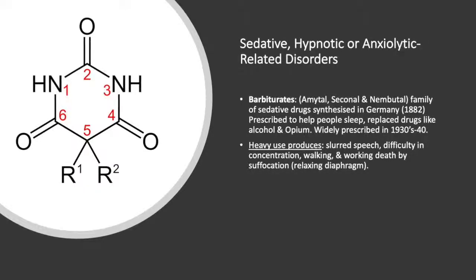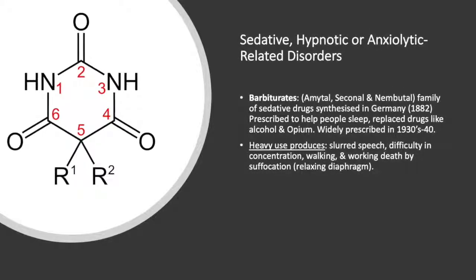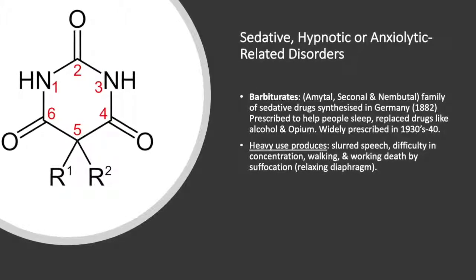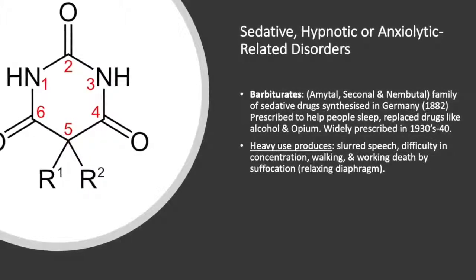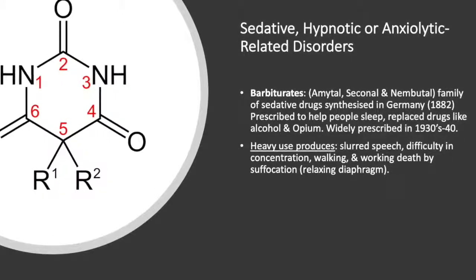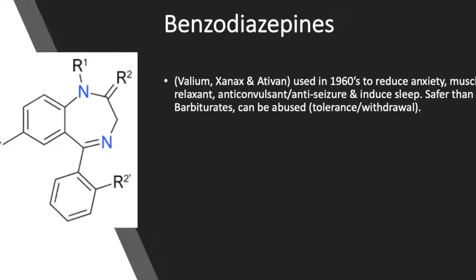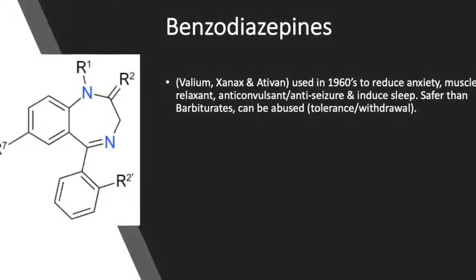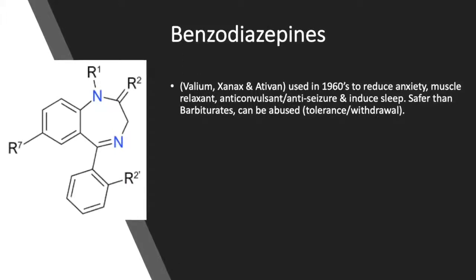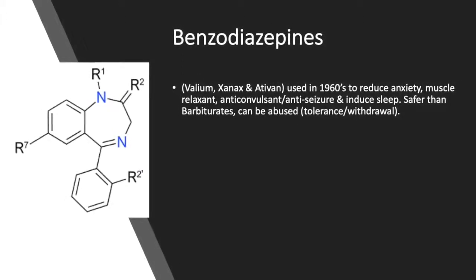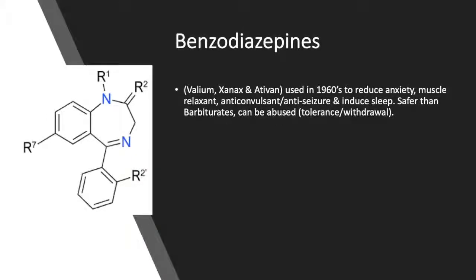Now I'll be talking about sedative, hypnotic, or anxiolytic-related disorders. Barbiturates, such as amytal, seconal, and nembutal, are a family of sedative drugs synthesized in Germany in 1882. They were prescribed to help people sleep and replace drugs like alcohol and opium, and were widely prescribed in the 1930s and 40s. Heavy use of these barbiturates includes symptoms of slurred speech, difficulty in concentration, walking, and working, and death by suffocation since the diaphragm becomes so relaxed. There are also benzodiazepines, like Valium, Xanax, and Ativan, which were developed in the 60s to reduce anxiety and serve as a muscle relaxant, anti-convulsant, anti-seizure, and to induce sleep. They were safer than barbiturates, but these substances can also be abused, whereby individuals can develop tolerance and withdrawal.